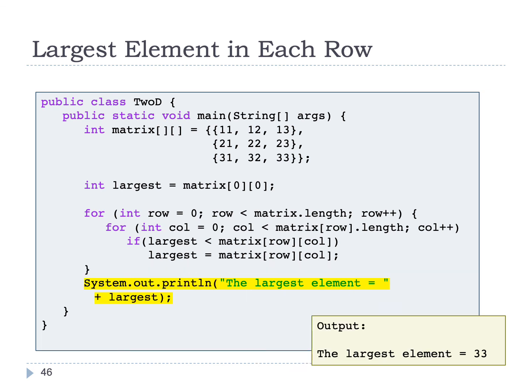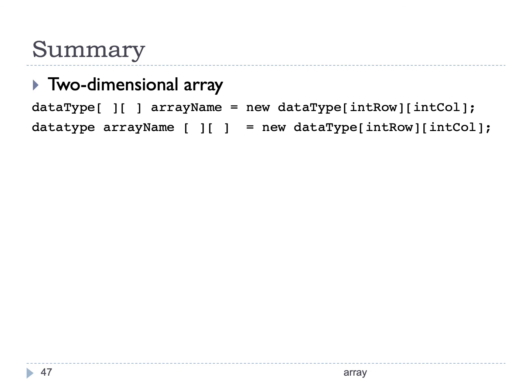If we write System.out.println outside of the for loops, it will show the largest element for the whole array — so it depends on what you want the program to do. To summarize, we have looked at two-dimensional arrays where components are arranged in rows and columns. To declare or instantiate a two-dimensional array, we write the data type, two square brackets, the array name, equal to new data type, where the first square bracket refers to the row and the second refers to the column size. We also looked at examples using nested for loops to read and display rows and columns.